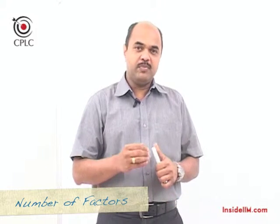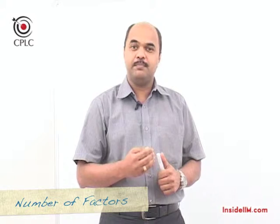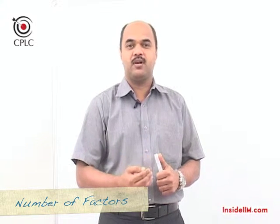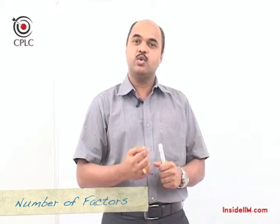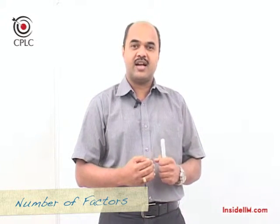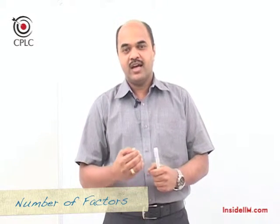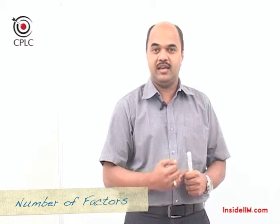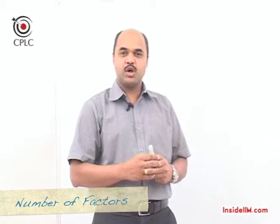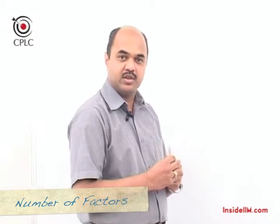If B is divisible by A, we can also say that B is a multiple of A. So when we consider two numbers A and B such that A is a factor of B, then A divides B, and if B is a multiple of A, then B is divisible by A. With this knowledge, let's understand how to calculate the number of factors for any given number.